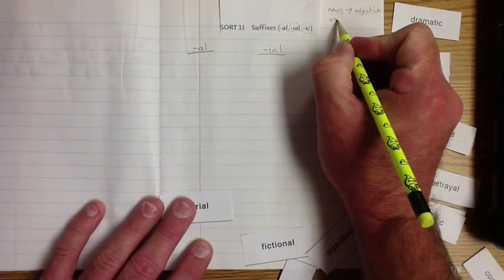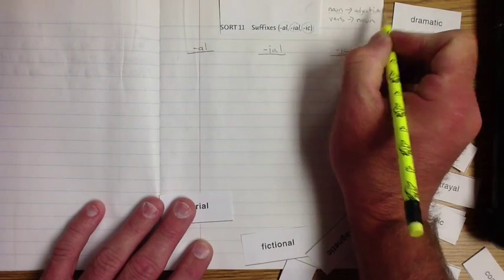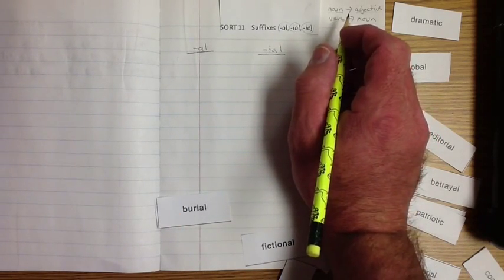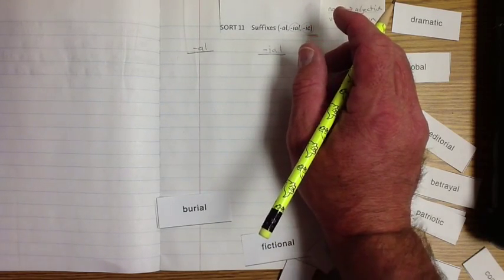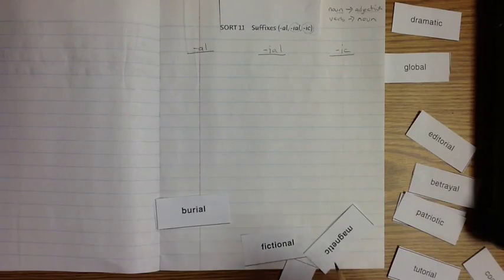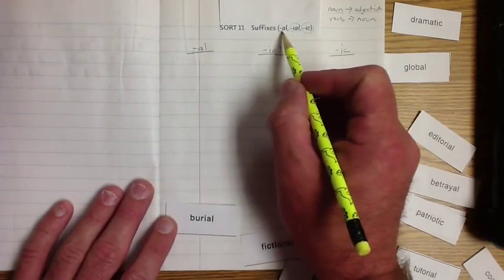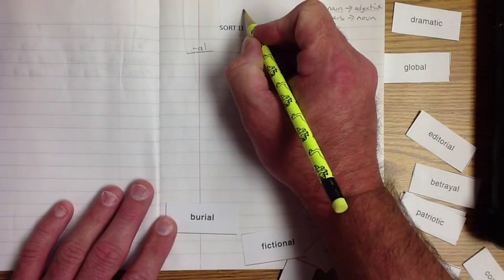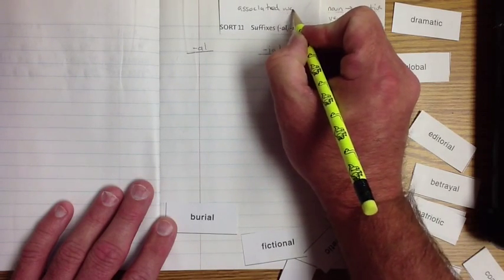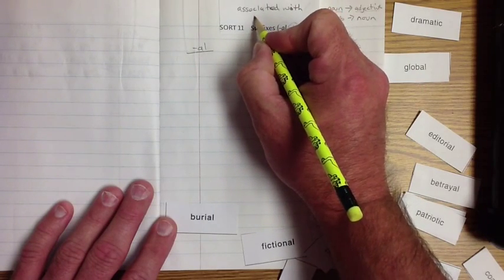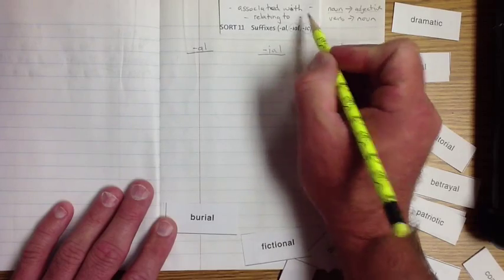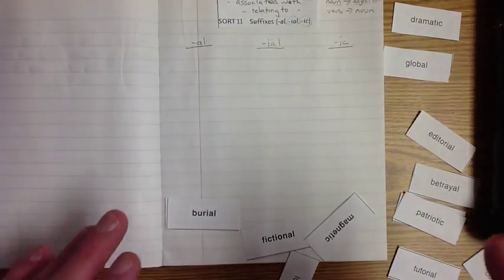There's some other things also. It can take it from a verb to a noun. A verb is something that a noun does. But every one of these means associated with, or relating to. That's what these suffixes actually mean, is associated with or relating to. I'm going to show you what I mean in our first word.